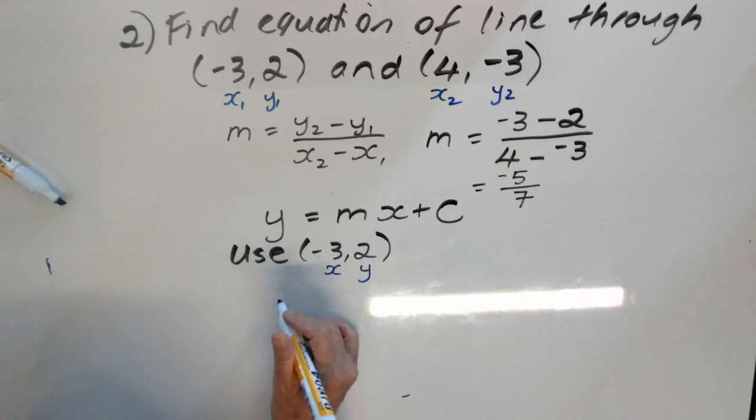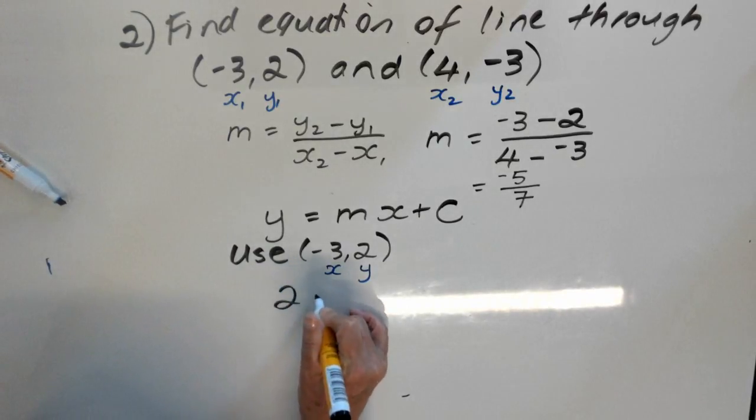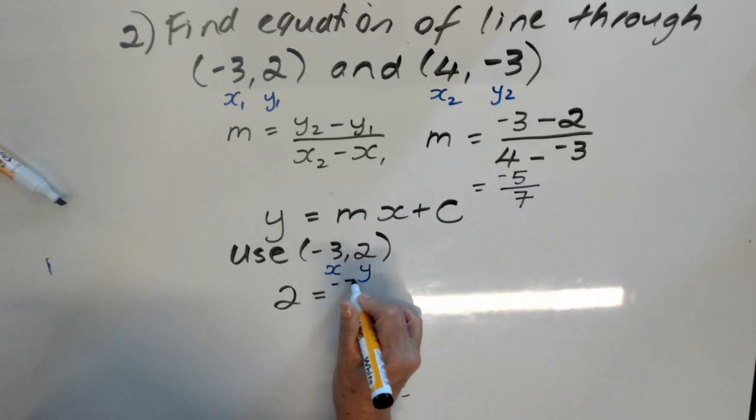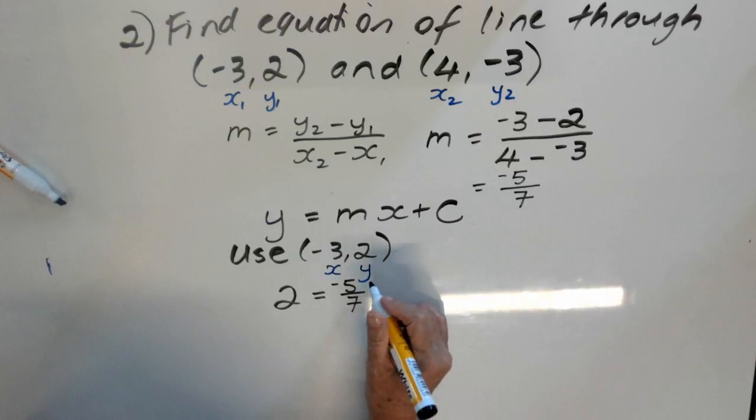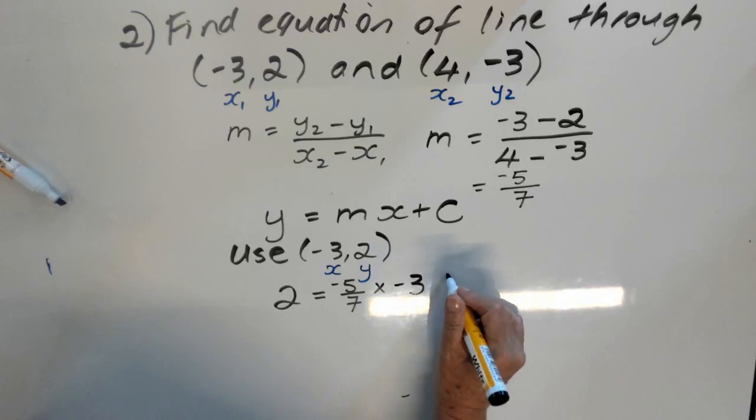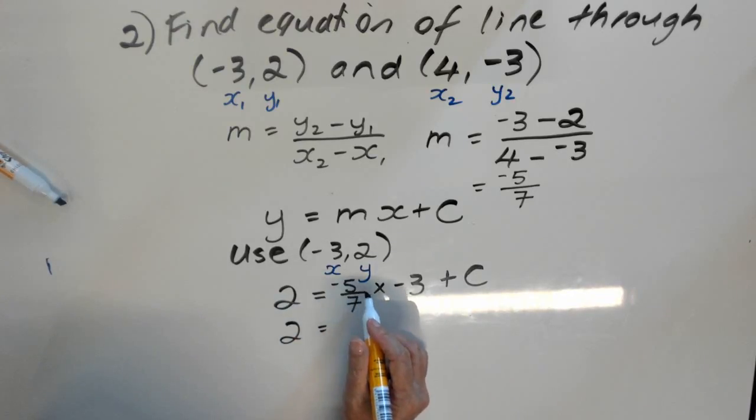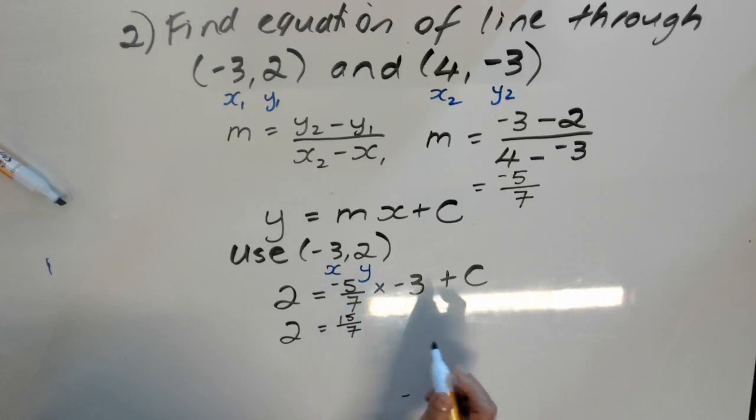And we're going to use it in this equation with the things that we know. We know that our y, for a point that fits on the line, is 2. We know our gradient is negative 5 over 7. We know that our x, in this case, is negative 3. And we're looking still for c. So, I'm going to write 2 equals negative 5 times negative 3. I've got 15 over 7 plus c. Our 15 over 7 is added. Take it to the other side, subtract it.